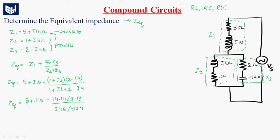After simplification of this, we will get Z equivalent equal to 5 plus J10 plus 4.47 at an angle 26.53. Now we are converting this 4.47 at an angle 26.53 into A plus JB form.